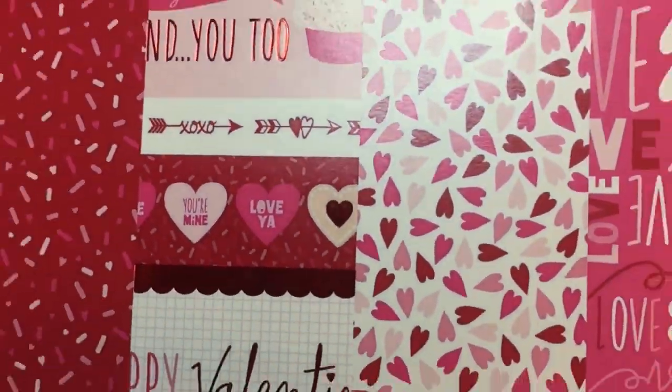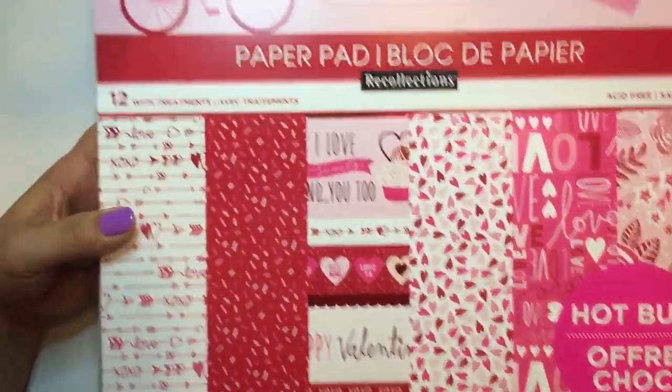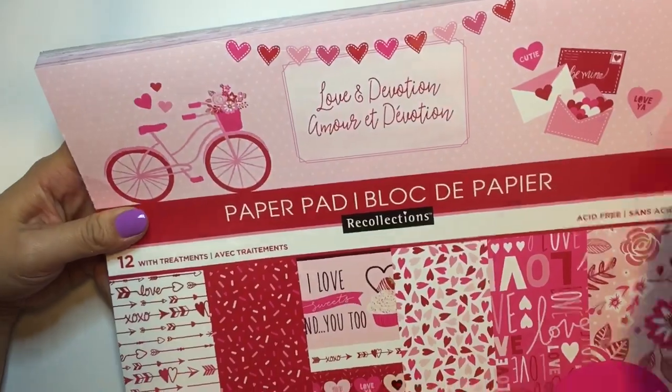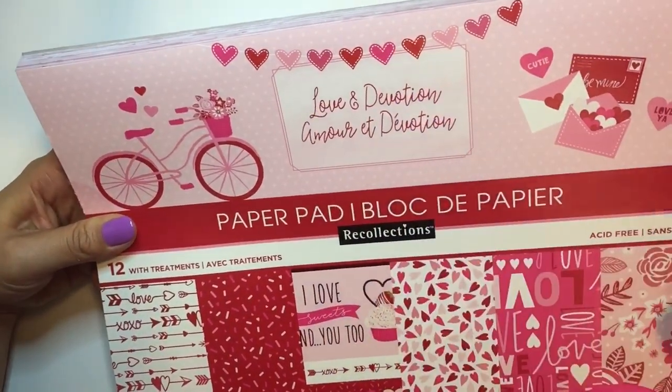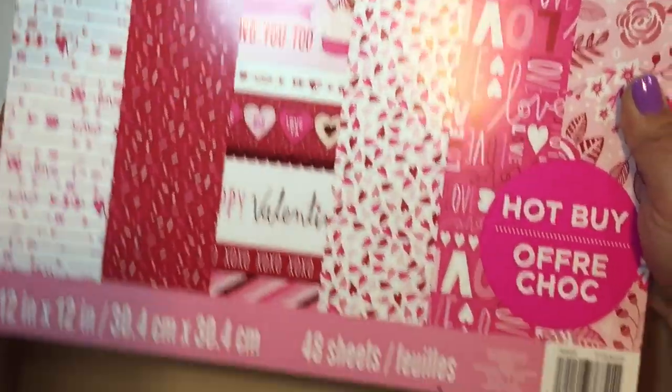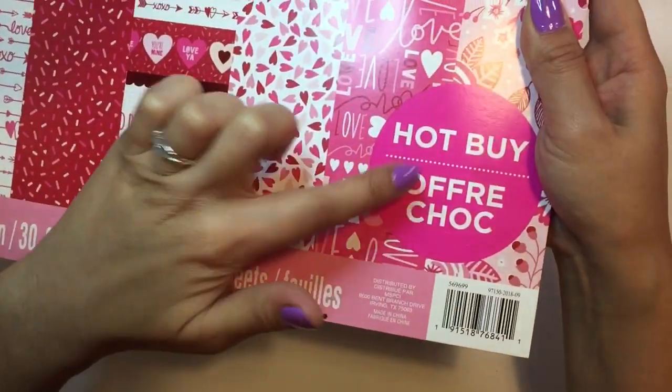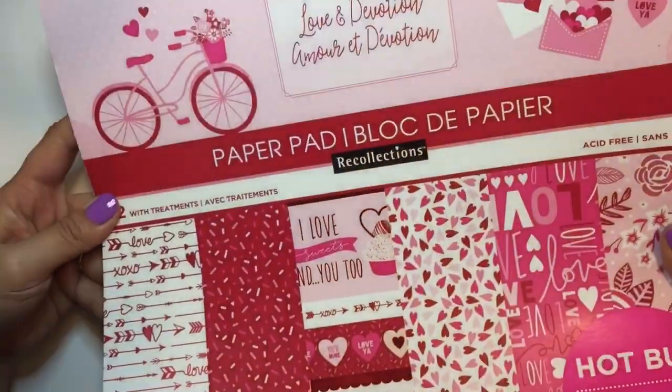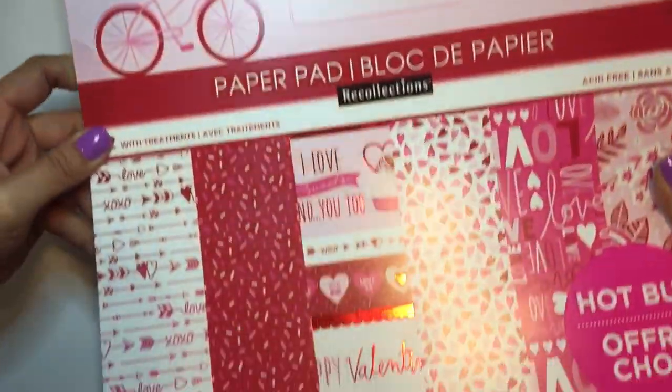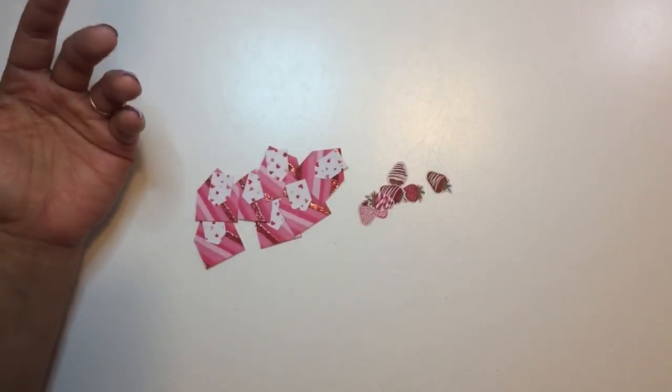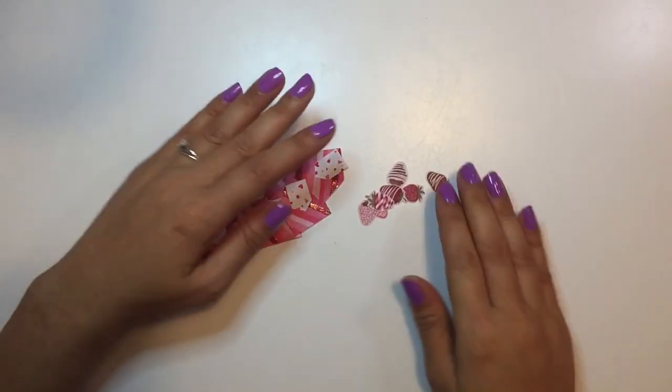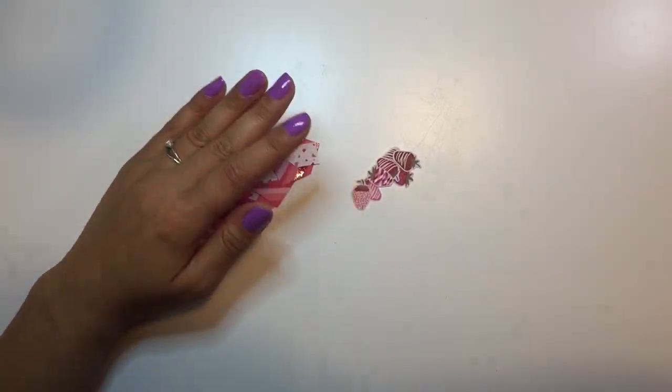This is the paper pad that I used. I got at Michael's. It's called Love and Devotion. I thought it was so cute. I actually love the bicycle in this. It's the Hot Buy paper pad. Super cute and I love the colors. So that's the paper pad I used for these embellishments.